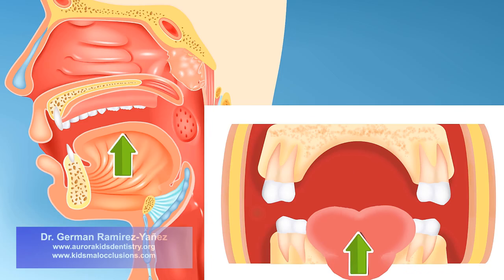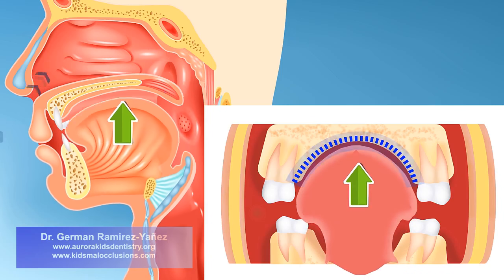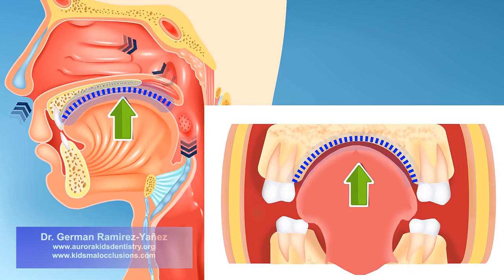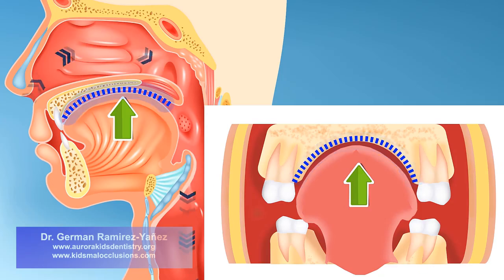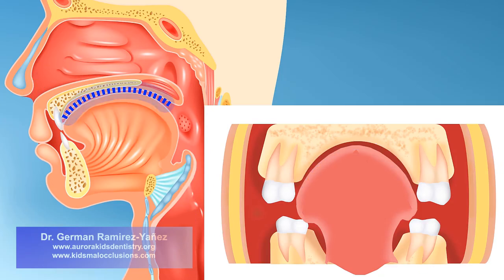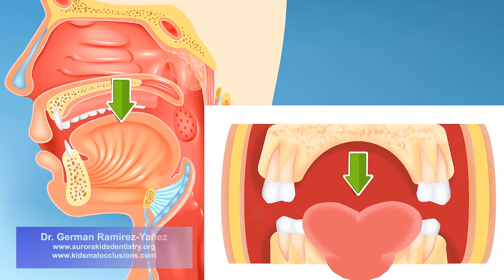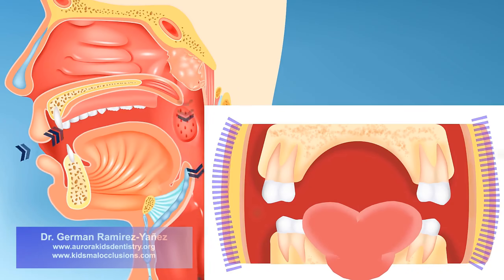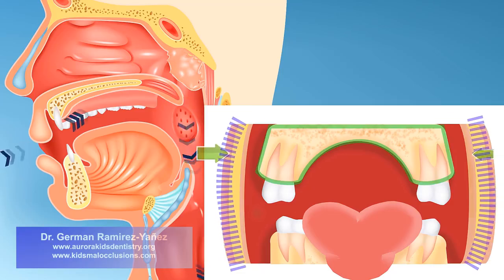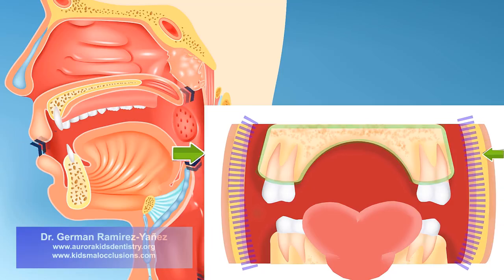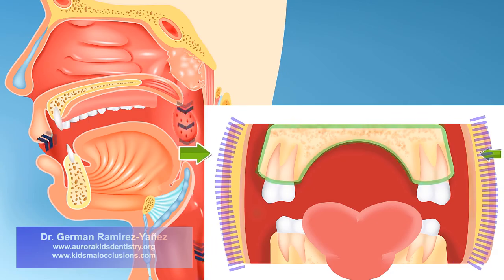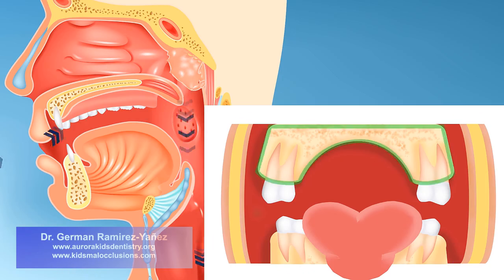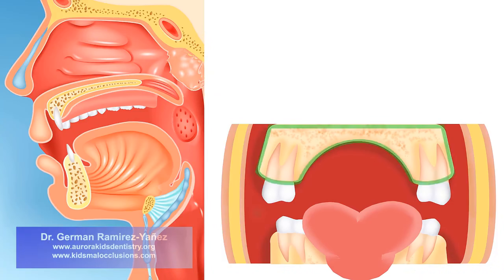Breathing through the nose is the correct way, and so the tongue is able to rest on your palate, stimulating normal growth and development of your upper jaw. Conversely, when you breathe through your mouth, your tongue has to descend and protrude. At the same time, the pressure of your cheeks increases, pushing the upper jaw inwards, so the growth and development of your upper jaw is negatively affected, resulting in a narrow and high palate.